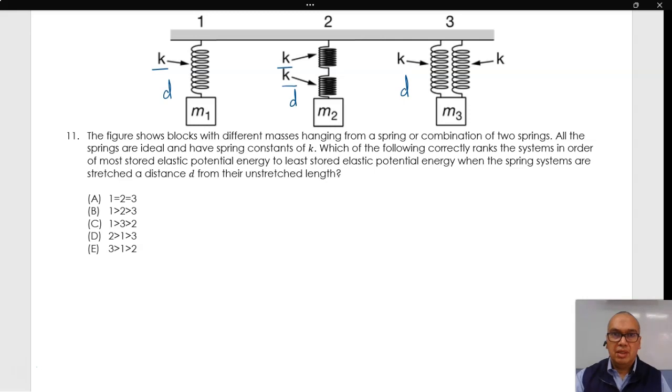However, the number of springs varies and the disposition of the springs also changes. In the first case we have one spring, so that the elastic potential energy is just one half of the constant times the distance d squared.